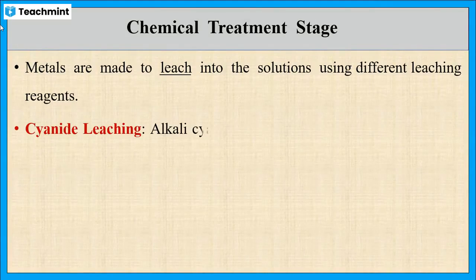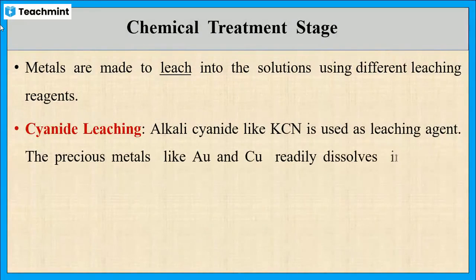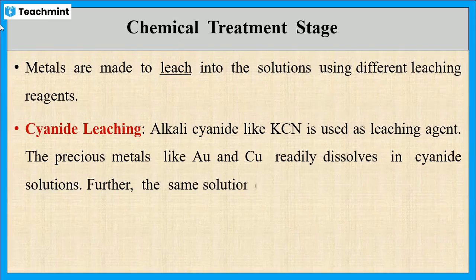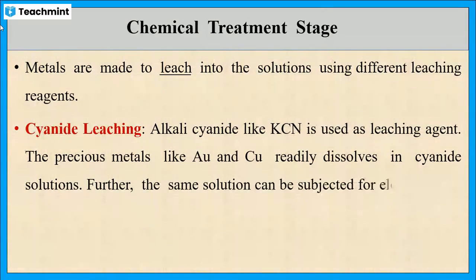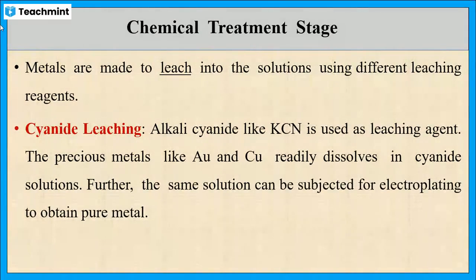The first leaching reagent is cyanide leaching. Precious metals like gold and copper easily dissolve in alkali cyanide compounds like potassium cyanide. Further, electroplating can be applied to this solution to obtain pure metal.